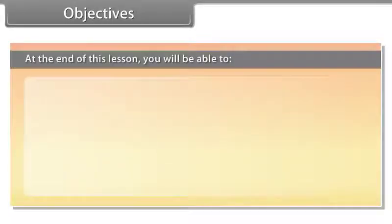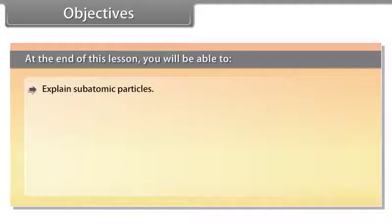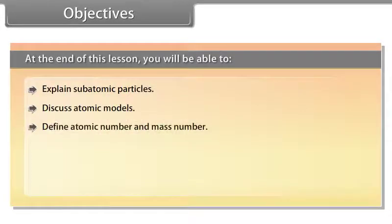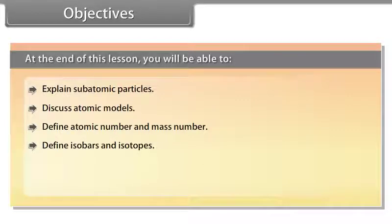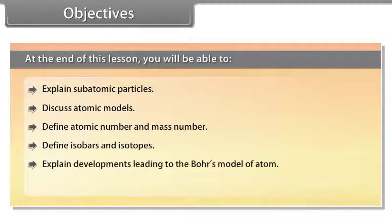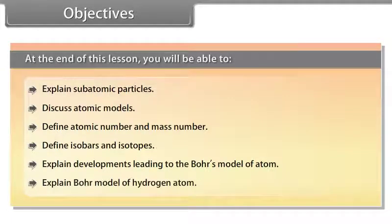Objectives: At the end of this lesson, you will be able to explain subatomic particles, discuss atomic models, define atomic number and mass number, define isobars and isotopes, explain developments leading to Bohr's model of atom, and explain Bohr's model of hydrogen atom.